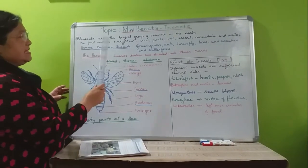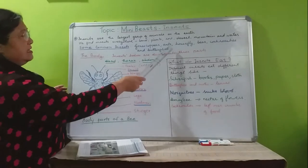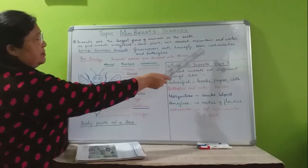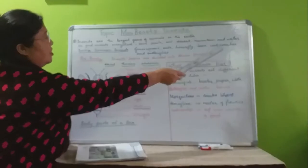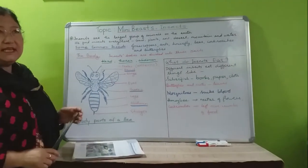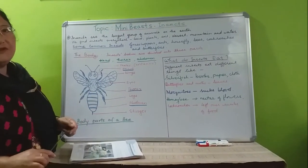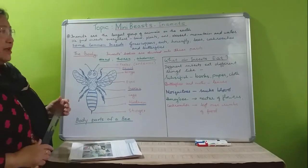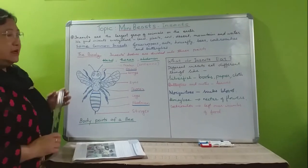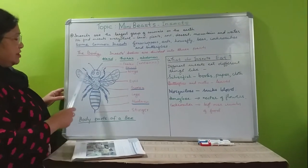Some common insects are grasshoppers and houseflies, bees, cockroaches, and butterflies. These are the common insects that we see in our surrounding areas. Today we are going to learn about the body of the insect.